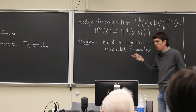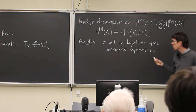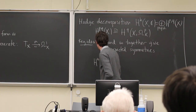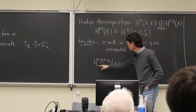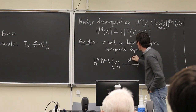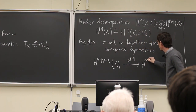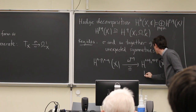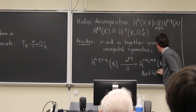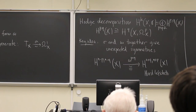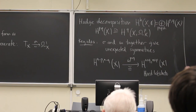The first kind of symmetry is Hard Lefschetz, coming from the Kähler form. If I take cohomology in some degree below the middle dimension, I can take a cup product with the Kähler form a certain number of times, and then I go to degree above the middle dimension — this is an isomorphism. That's Hard Lefschetz. There's some analysis behind it, but we know that's true.